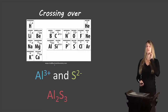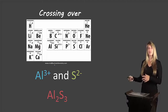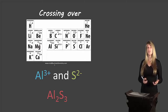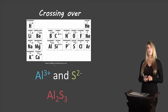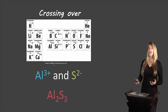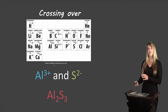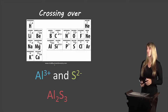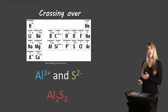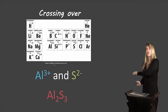Because the overall charge is always zero, we have something called the zero sum rule. We won't go into detail on that in this video, but I can show you in class. Instead, we'll use something faster called crossing over. The way it works is you look at the charge on each ion and cross that charge over to become the subscript for the other element.